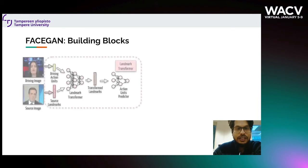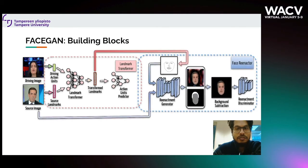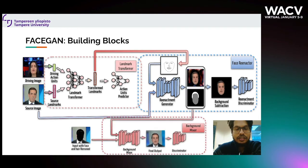FaceGAN's building blocks include a landmark transformer that takes action units from the driving image and landmarks from the source image, passes them through a fully connected layer, and generates transformed landmarks. These transformed landmarks have a heatmap representation and go to the reenactment generator, which gives the segmentation of the face and background — we only take the face from here. We extract the background from the source image using a pre-trained segmentation network and pass it to the background mixer along with the generated face to produce the final image.